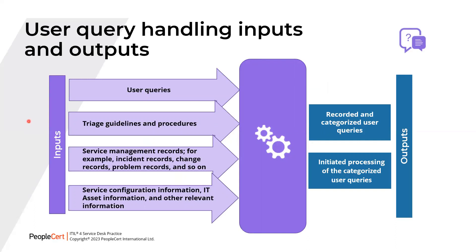Each process has specific inputs, activities, and outputs. For the user query handling process, the inputs are: the user queries themselves, triaging guidelines and procedures of the provider organization, existing service management records such as incident records, change records, and problem records, service configuration information, IT asset information, and other relevant information. The outputs from this process are two: the recorded and categorized user queries, and initiated processing of those categorized user queries. These are all very intuitive — because it is user query handling, naturally, there would be categorized and recorded queries, and their processing must be initiated.